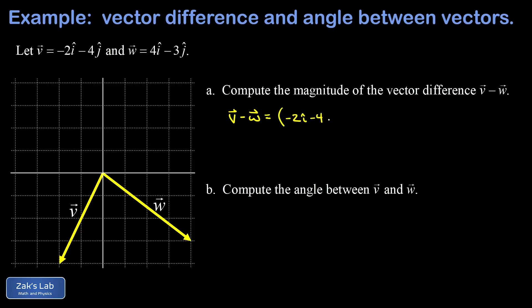So I have for v, -2i-hat - 4j-hat, and then we're subtracting from that w which is 4i-hat - 3j-hat. We combine like terms: -2i-hat - 4i-hat gives -6i-hat. And -4j-hat + 3j-hat gives -j-hat. So the component form of the vector difference is -6i-hat - j-hat.